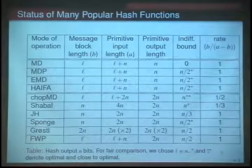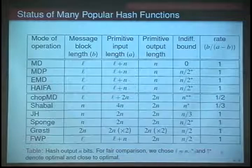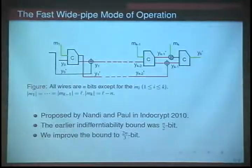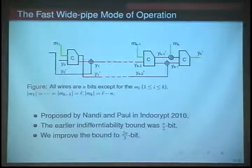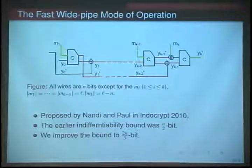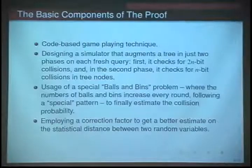If you increase the bound, you probably have to compromise on security. In this direction, we showed that if you just feed half of the chaining value forward to the succeeding block, you can get a more secure hash function. In the earlier paper, Nandi and I showed that the indifferentiability bound is directly n/2 bits, and in this talk we claim that we have improved this to n/3 bits.